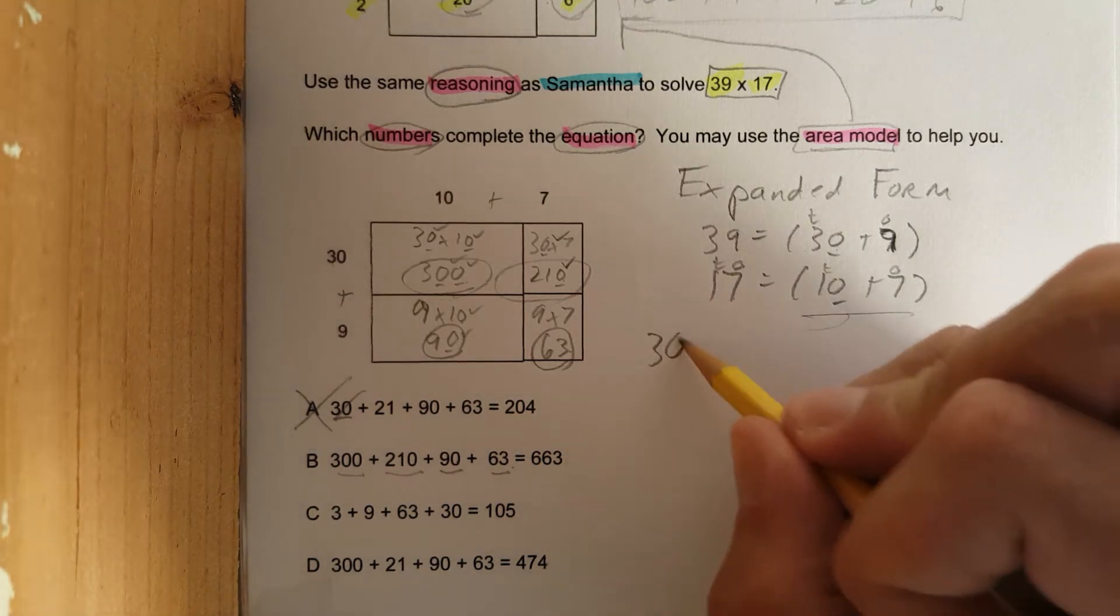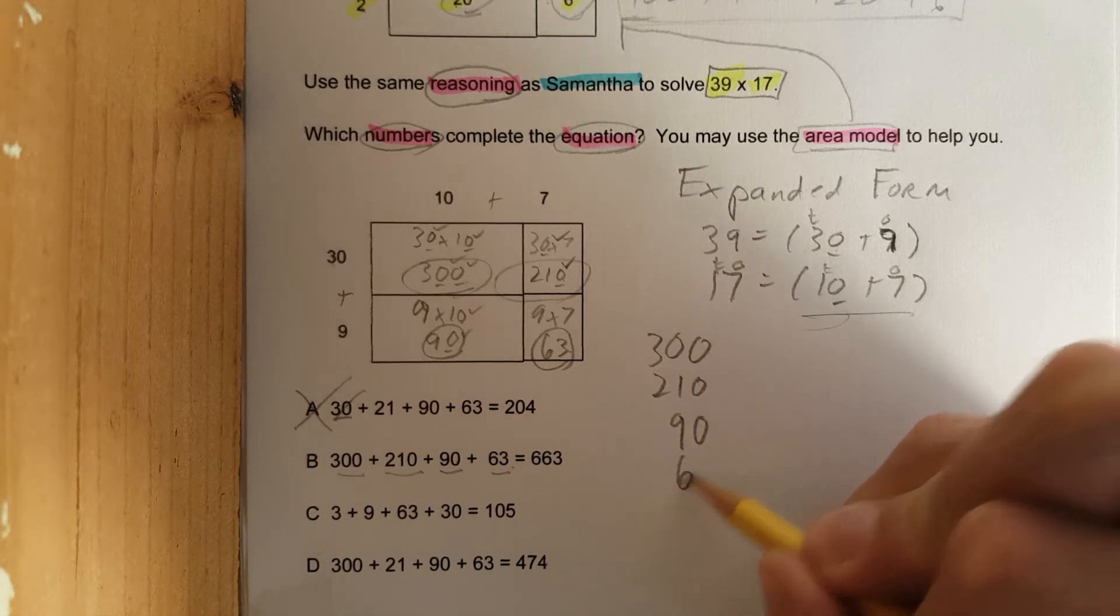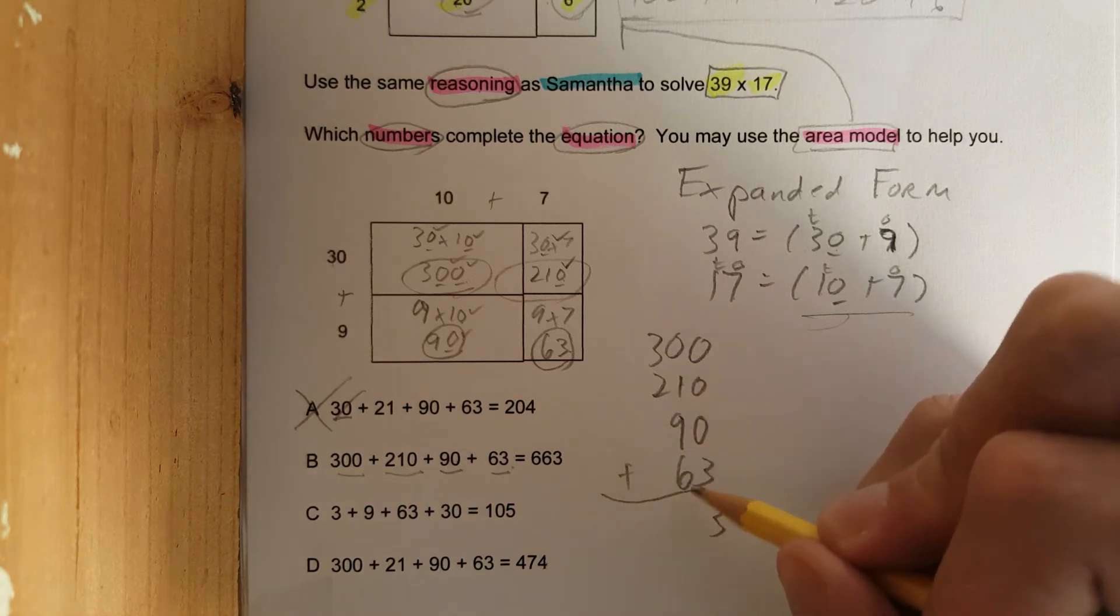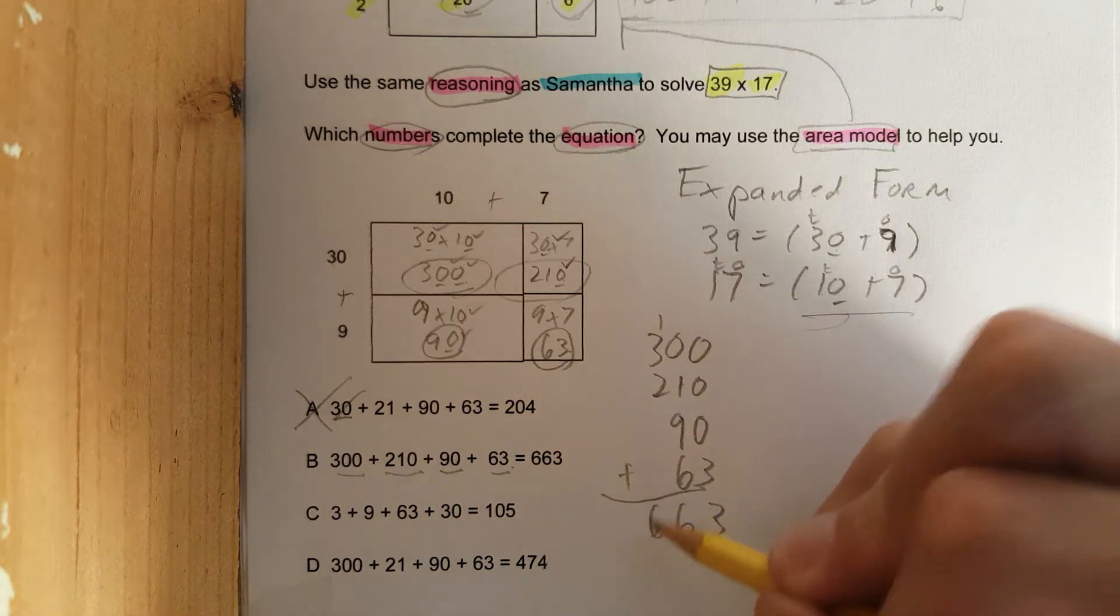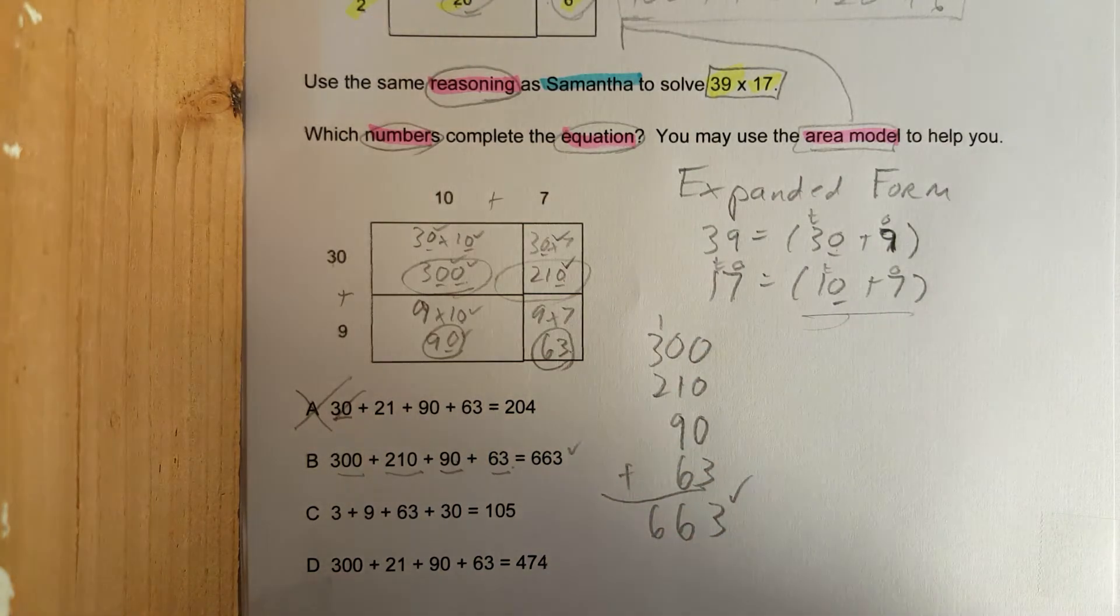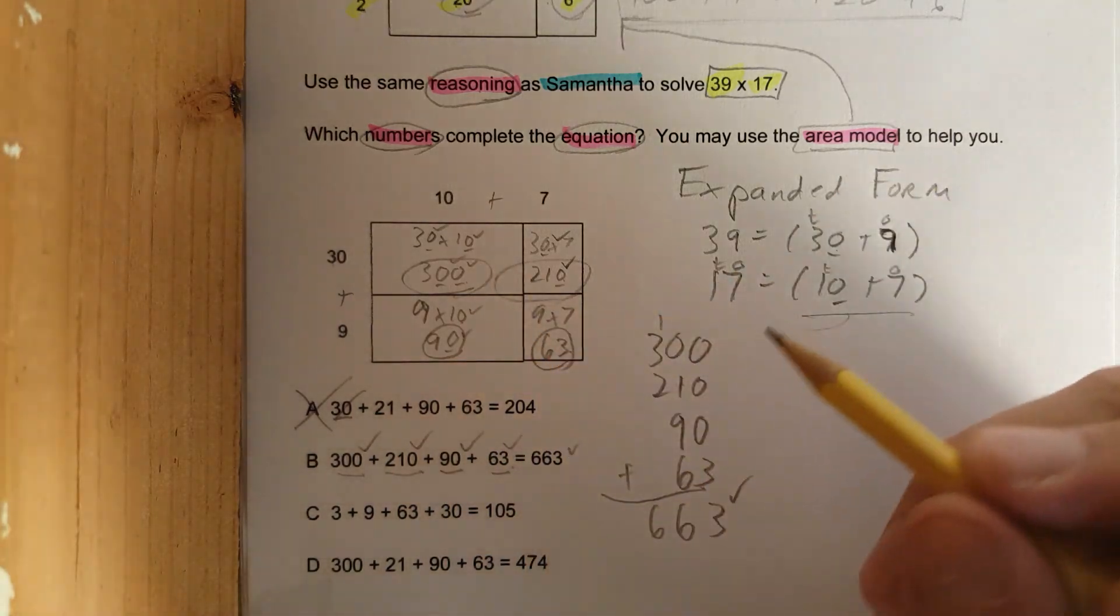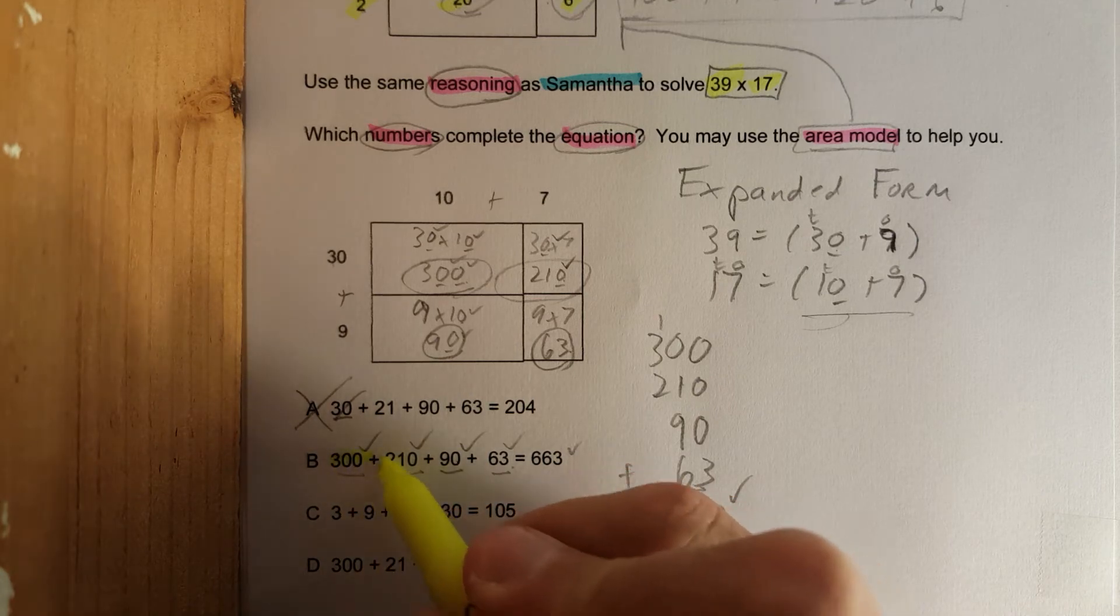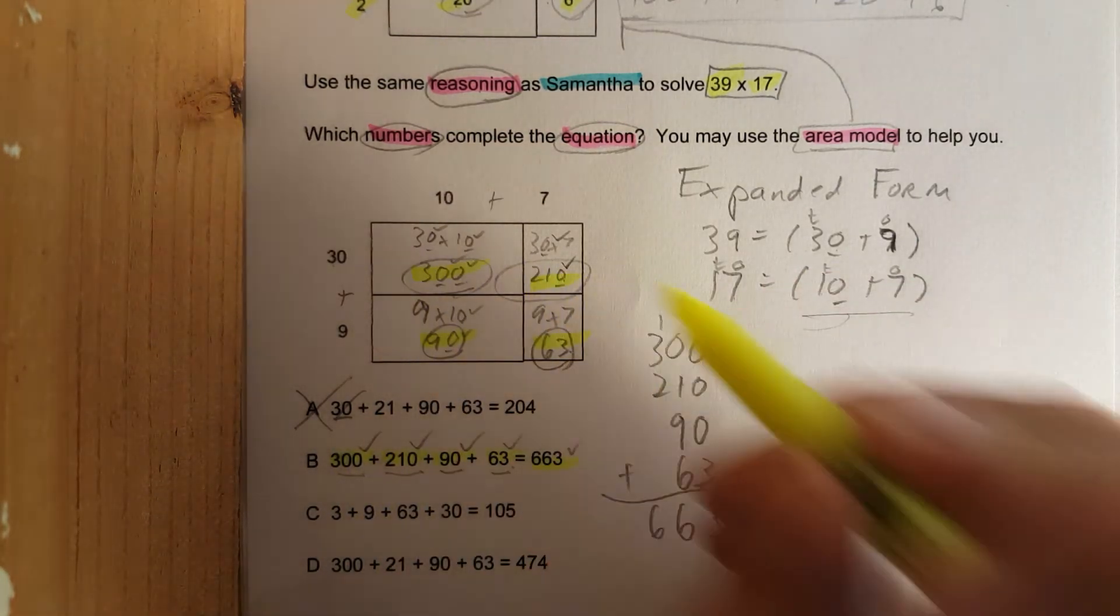Did they add it correctly? Three, nine plus one is ten, ten plus six is sixteen, carry that one, five six. Okay, they did add it correctly. So everything is checking off here, it all works. Watch this: 300, 210, 90, 63, there's all the numbers right there.